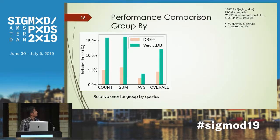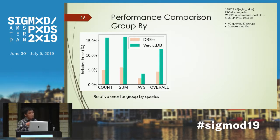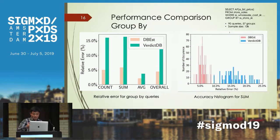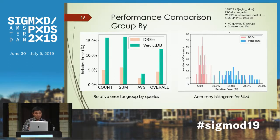With sample size fixed at 10k, the overall error for DBS is around 5%, while for VerdictDB it is more than 10%. Looking at the error histogram in detail, the error from DBS is around 5% with very small variance. But for the sample-based method, there is huge error for some groups.